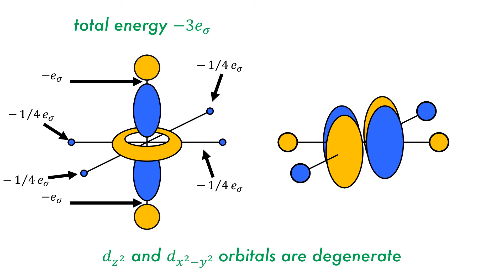Now the energies of the dx-squared minus y-squared need to be determined. Luckily, the total energy will be the same as the orbitals are degenerate. This means that each interaction is minus 3 quarters e-sigma to give a total energy of minus 3 e-sigma.